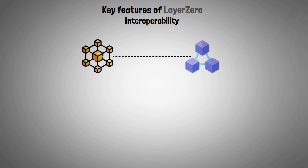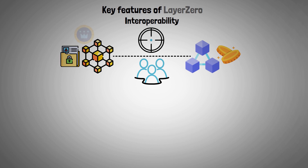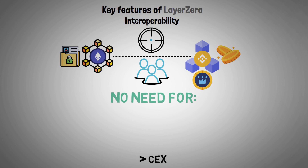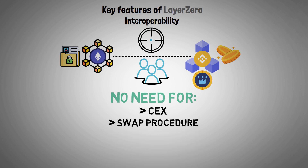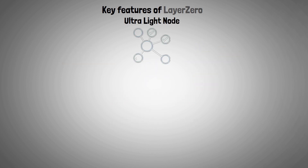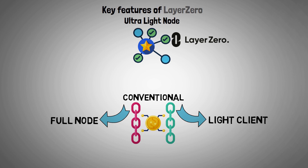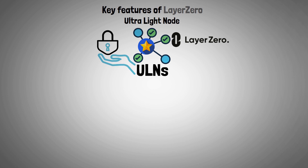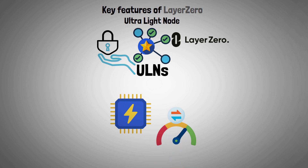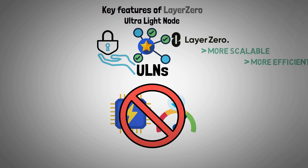Now let's look at the key features of Layer 0. Interoperability is Layer 0's main goal, enabling cross-chain communication. Users can easily move data and assets between blockchains — for example, tokens from Ethereum to BNB Smart Chain could be transferred without the need for a centralized exchange or a laborious swap procedure. Ultra-light nodes are one of Layer 0's unique features. Conventional blockchain bridges frequently depend on light clients or full nodes, both of which can be resource-intensive. ULNs offer the required security guarantees without requiring significant processing power or bandwidth, making Layer 0 more scalable and efficient.